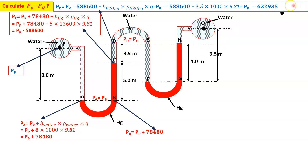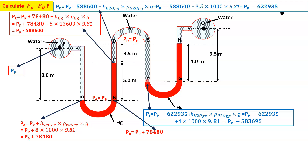From E moving downward to F, pressure increases: PF = PP − 622935 + H_water × ρ_water × g. The height of water here is 4 meters, density is 1000, and g is 9.81, so PF = PP − 583695. Drawing a horizontal line, PF = PG, so PG = PP − 583695.